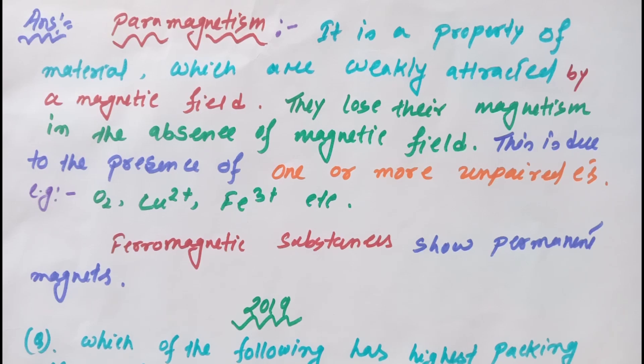Paramagnetism is a property of materials which are weakly attracted by a magnetic field. They lose their magnetism in the absence of magnetic field. This is due to the presence of one or more unpaired electrons. Examples are oxygen, cuprous ion, ferric ion, etc. These have unpaired electrons.